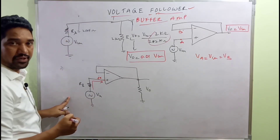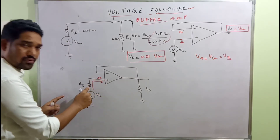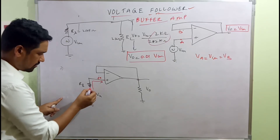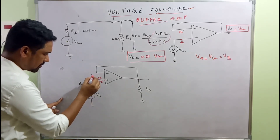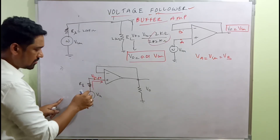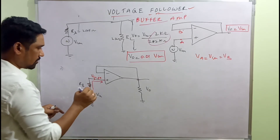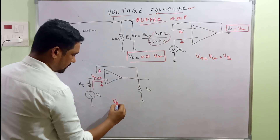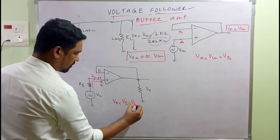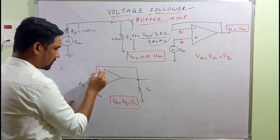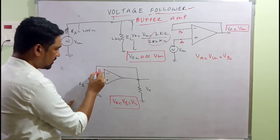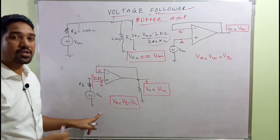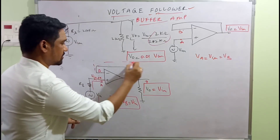Since there is no current through the source resistance RS, there is no voltage drop across it. Therefore, the same V-in appears at node A. According to the virtual ground concept, if this is node A and this is node B, VA equals VB equals V-in. Since the output terminal is directly connected to node B, V-naught equals V-in — attenuation is eliminated.